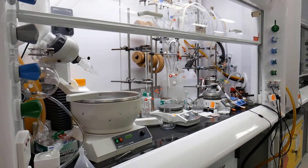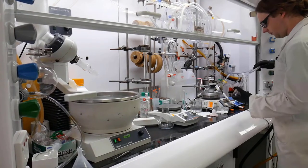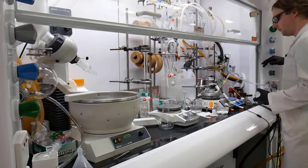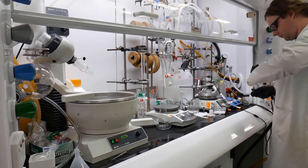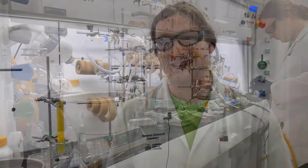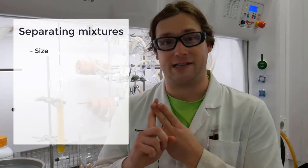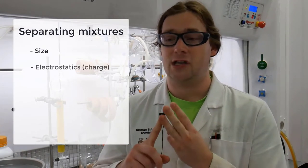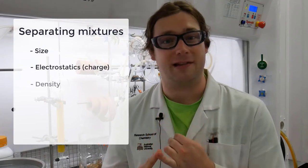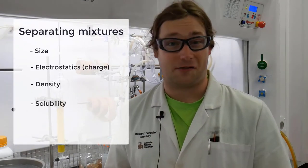To get nice clean compounds out the other end, let's take a look at how these work and some real examples that I do in the lab. The way that we go about doing these separations in the lab is to exploit differences in physical and chemical properties between compounds. Now these properties can range from things like size or the electrostatics of the compounds to the density or the solubility.